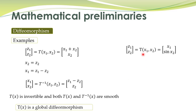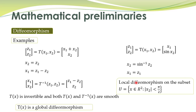Here is another transformation, and we want to study whether it is a diffeomorphism. It is indeed a diffeomorphism but not a global one. We can read that x2 equals sine-inverse of z2 and x1 equals z1. It is a diffeomorphism because the inverse transformation exists and both are smooth. However, the inverse transformation is only defined in a subset of the state space. Therefore it is a local diffeomorphism, not a global diffeomorphism.